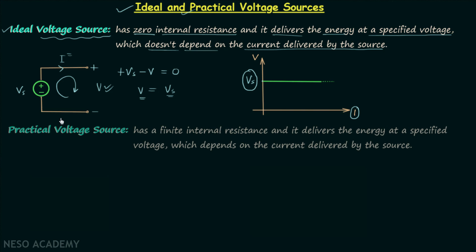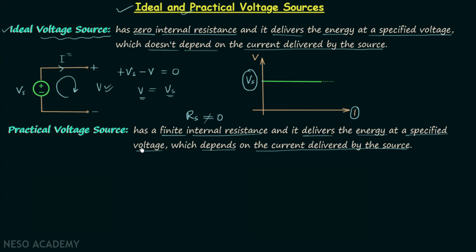Now we will talk about the practical voltage source. A practical voltage source has a finite internal resistance — this time Rs is not equal to zero; it is equal to some finite value. It delivers energy at a specified voltage, but this time the specified voltage will depend on the current delivered by the source. We have source voltage Vs, source resistance Rs, terminal voltage V, and current drawn from the source I.